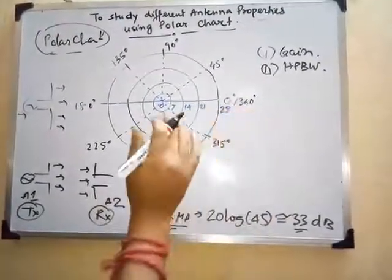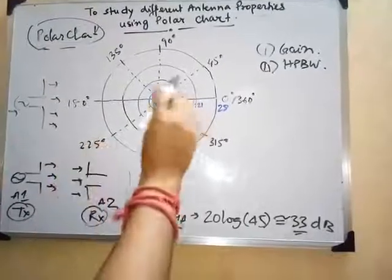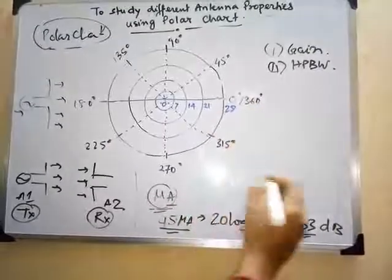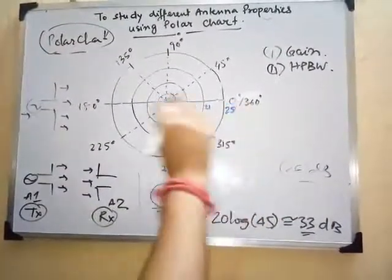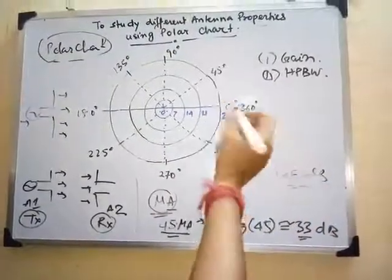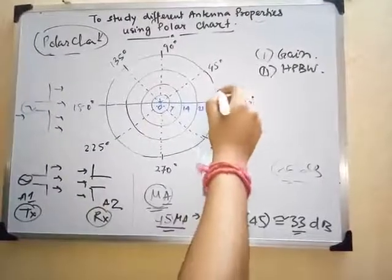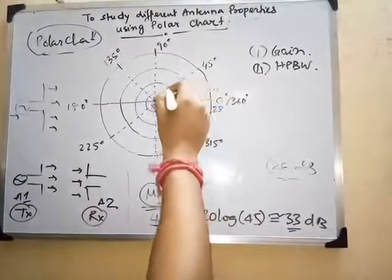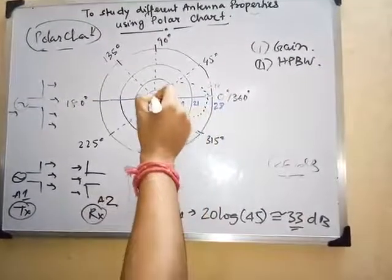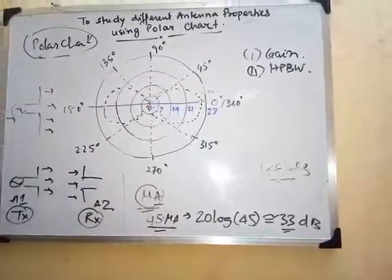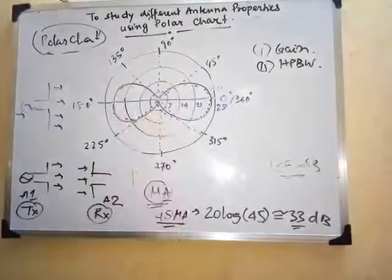At zero degrees, since the transmitting and receiving antennas face each other directly, you get the maximum gain — suppose 26 dB. You plot this value on the polar chart. Then you continuously rotate the antenna through the full 360 degrees in 10-degree steps, plotting each dB value as a point. Joining all points produces the radiation pattern plot for the dipole antenna.